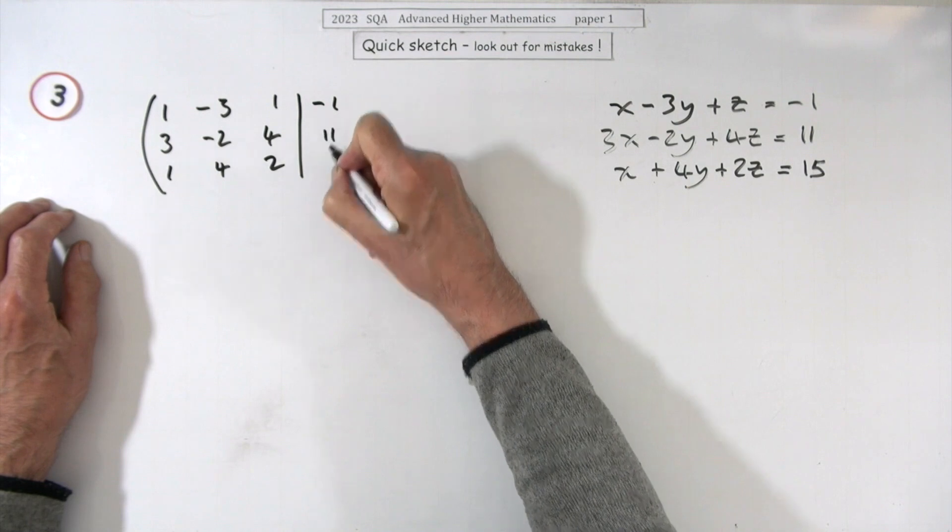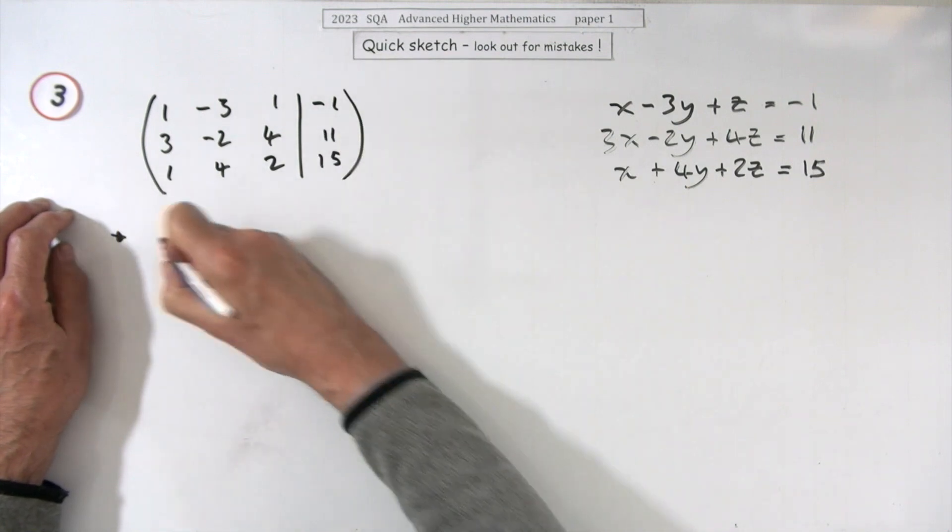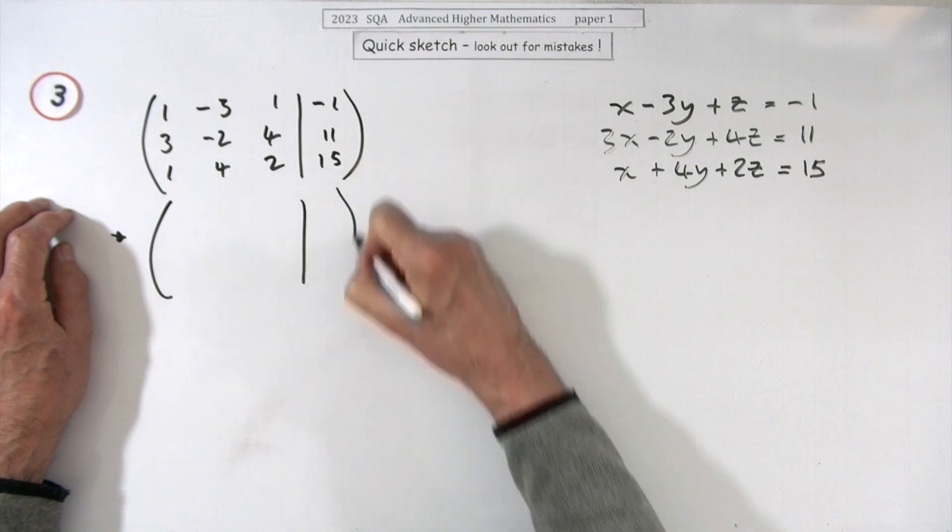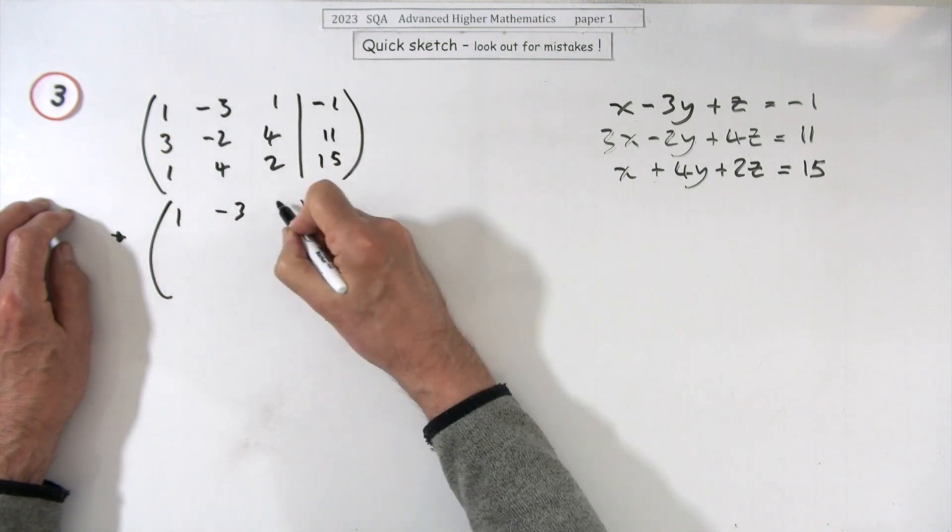solutions: negative one, eleven, fifteen. Now transform it, starting to get these two down to zeros. Leave that alone, they're nice and handy. Start with that one.